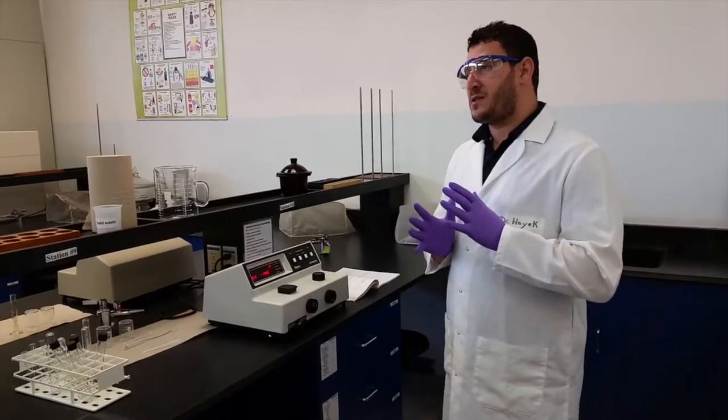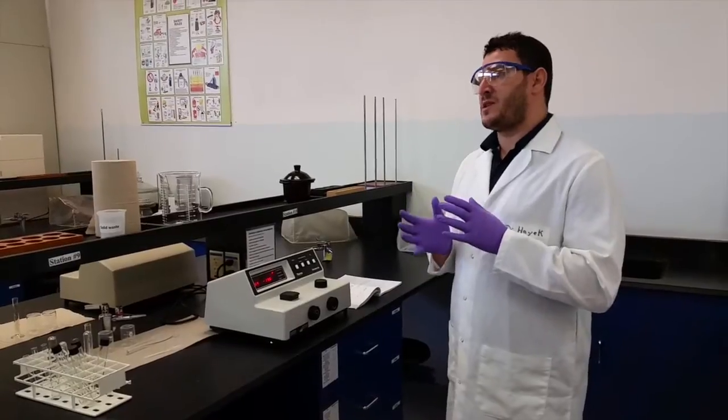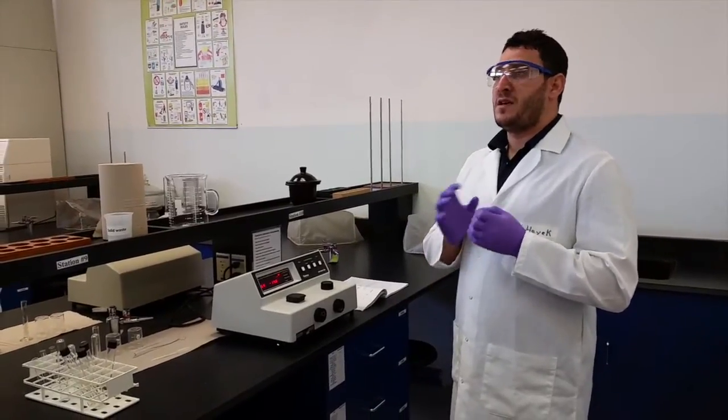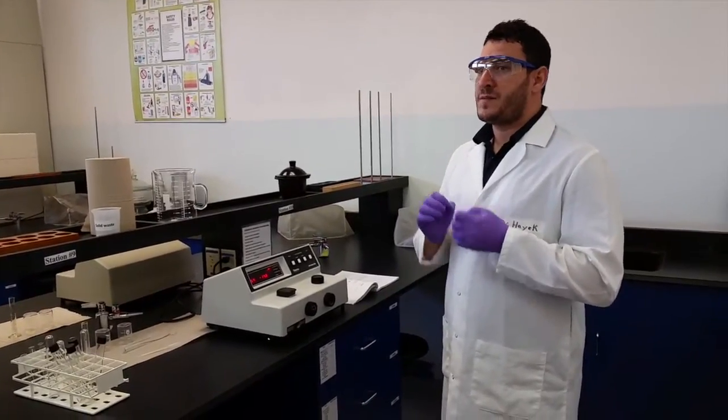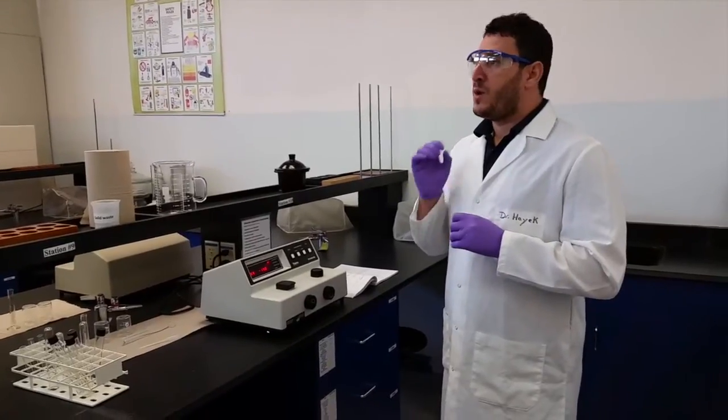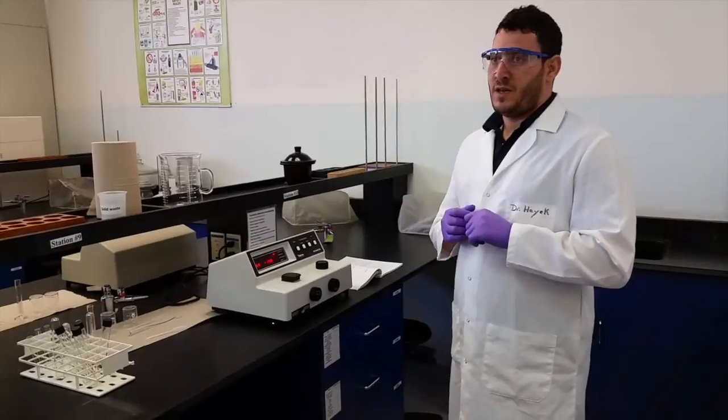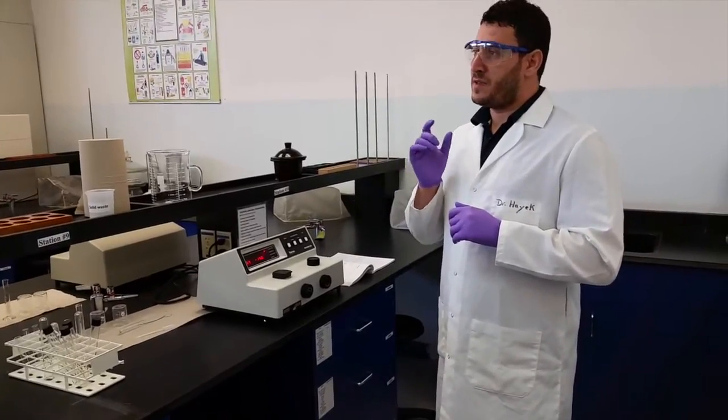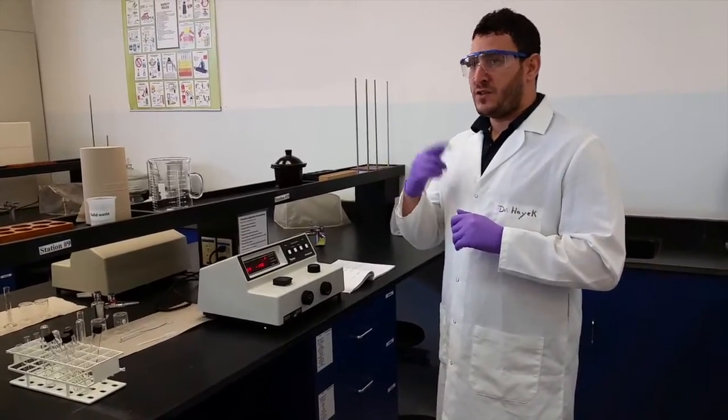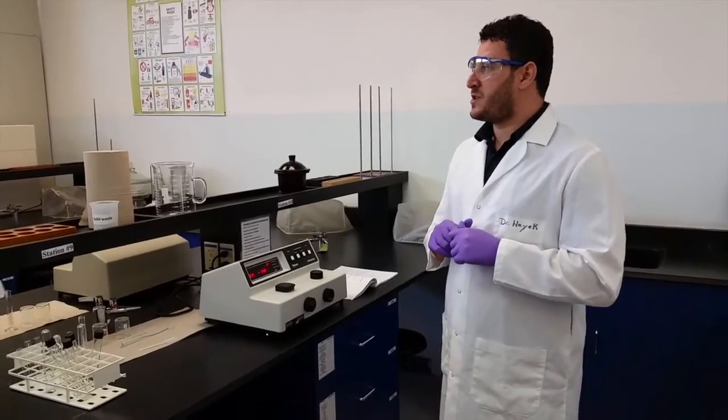From this we understand that the species that absorbs light in this equilibrium is Fe(SCN)2+. When we measure the absorbance of the solution, we are measuring the absorbance of this species, and therefore we can determine its concentration in our mixture.